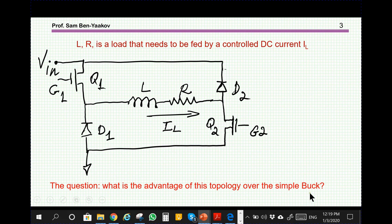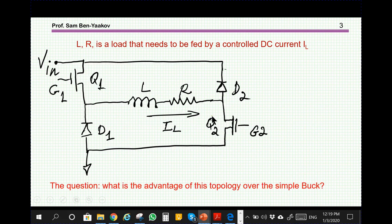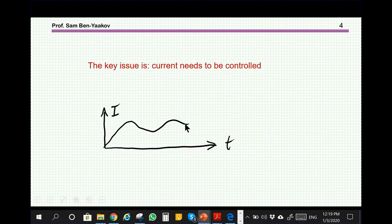Here we have the buck which can also feed the current, and here we have a more sophisticated circuit. The question was what is the advantage of this circuit. Now the key issue here is the control of the current.